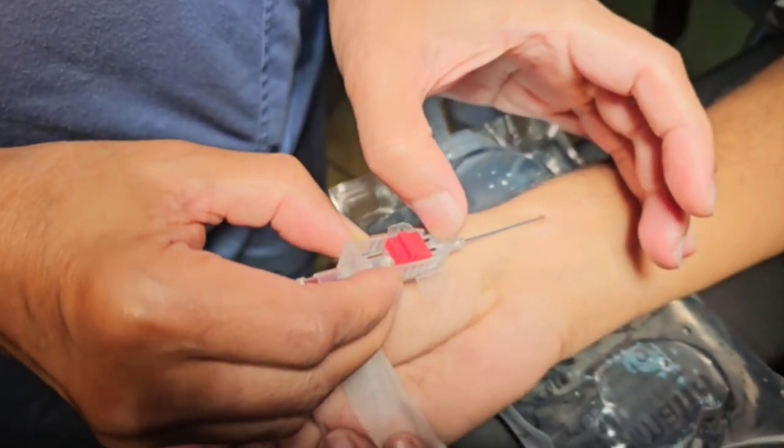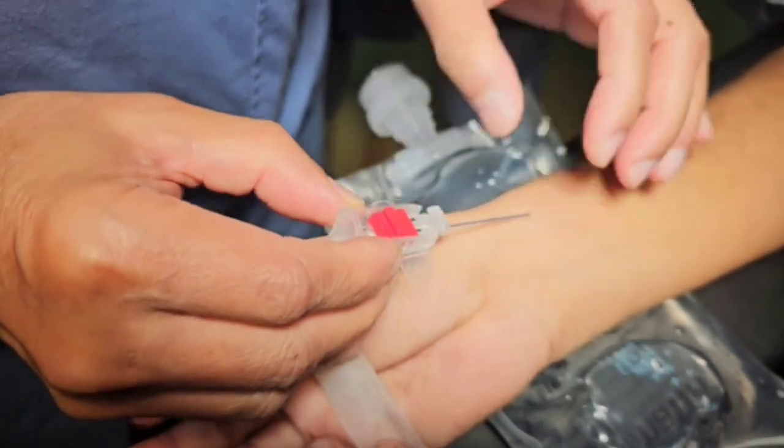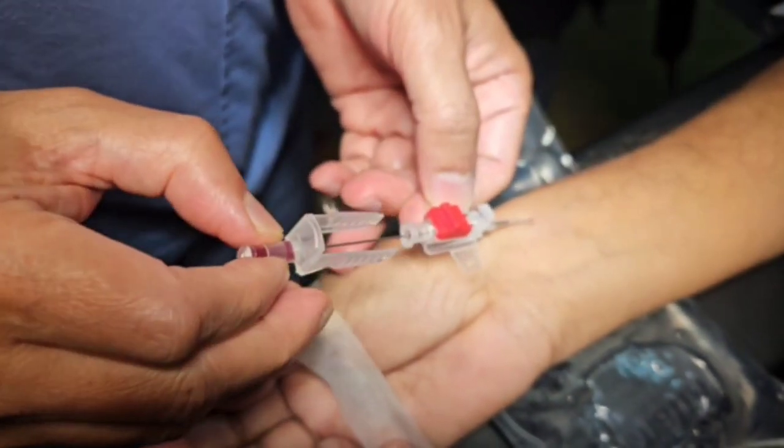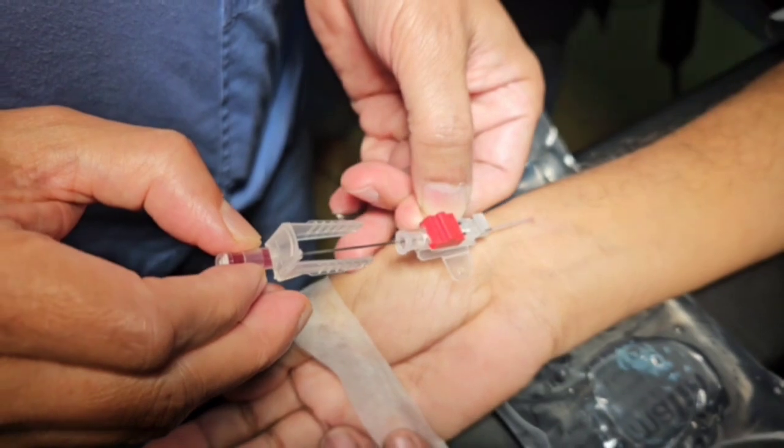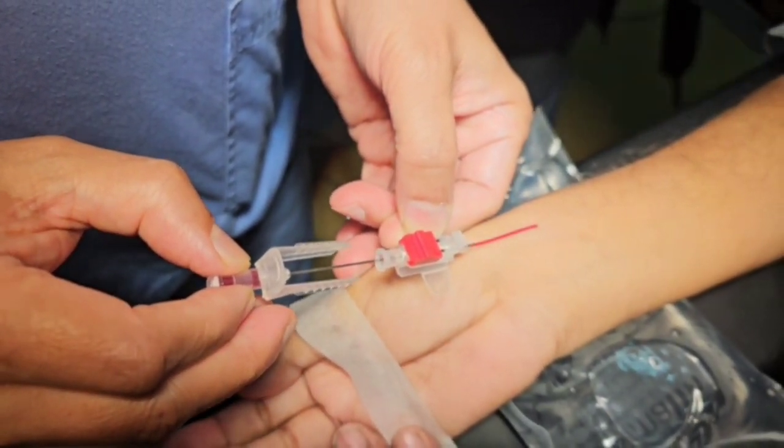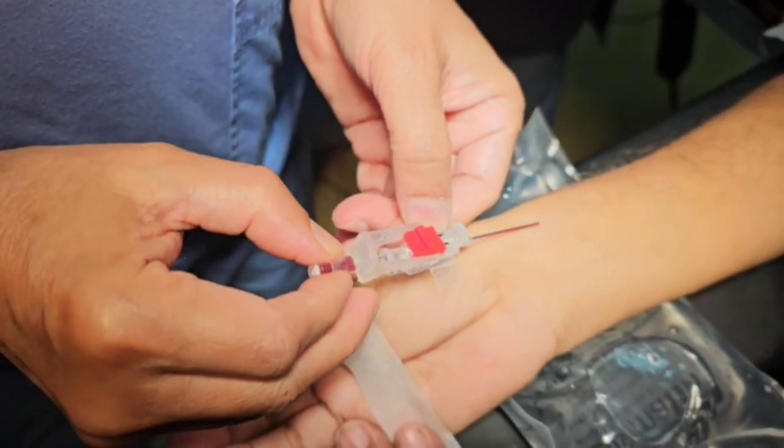If the catheter cannot be advanced over the needle, then we have to shift to the through-and-through technique where we advance the needle further 1 to 2 millimeters, then remove the needle slightly backward from the catheter and look for pulsatile blood flow as the catheter is pulled backward.